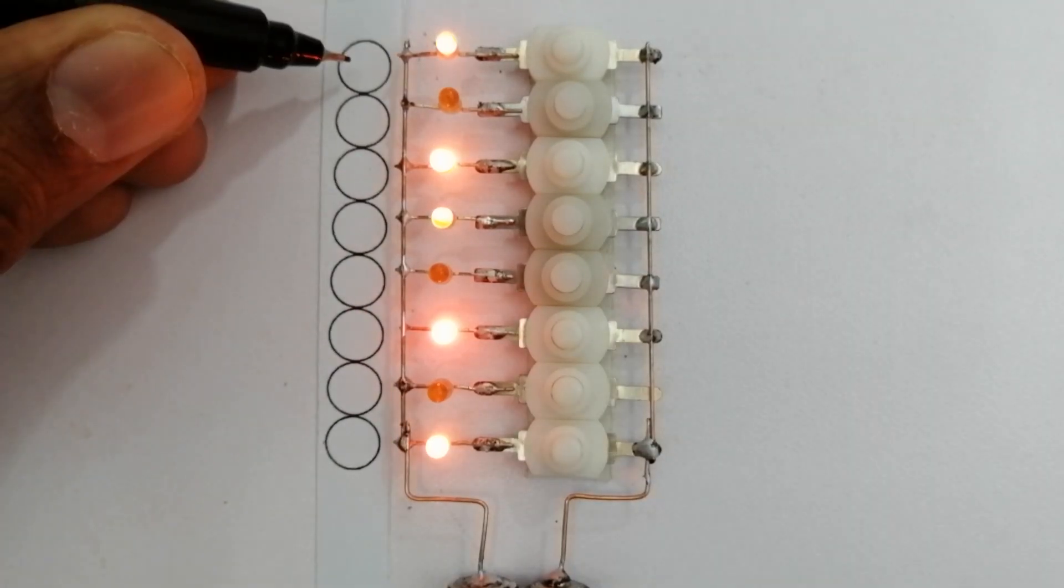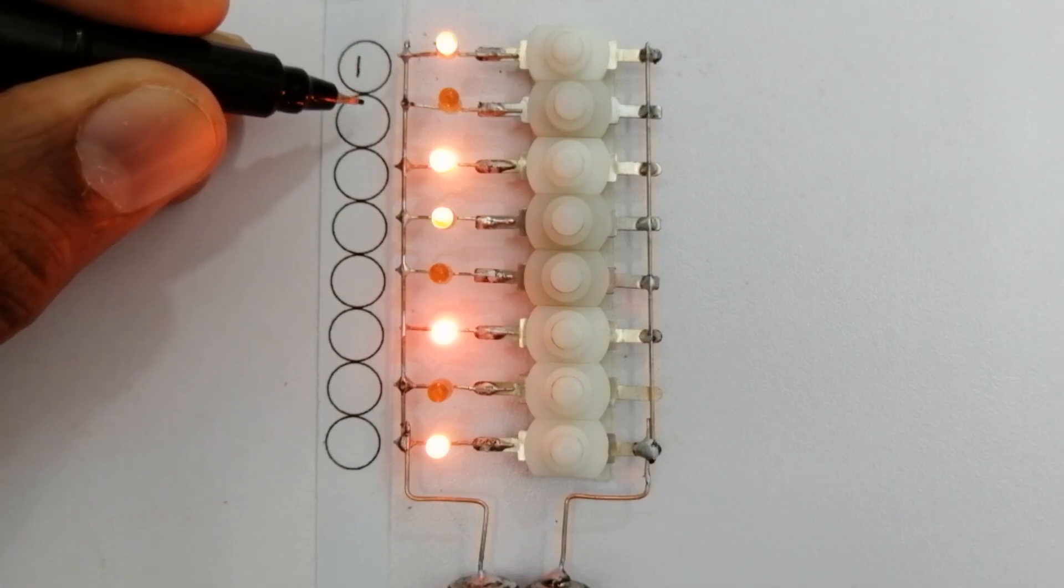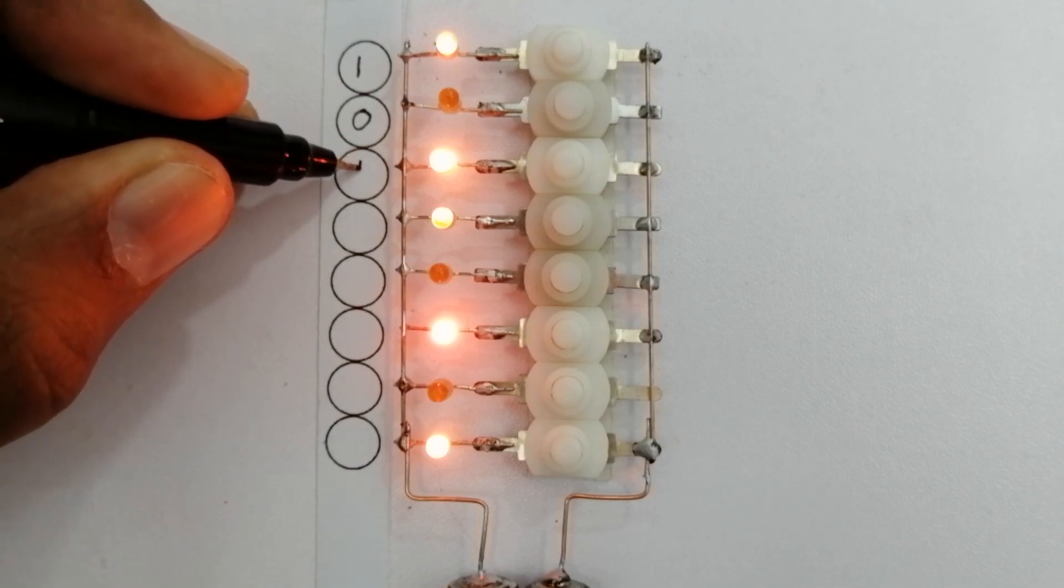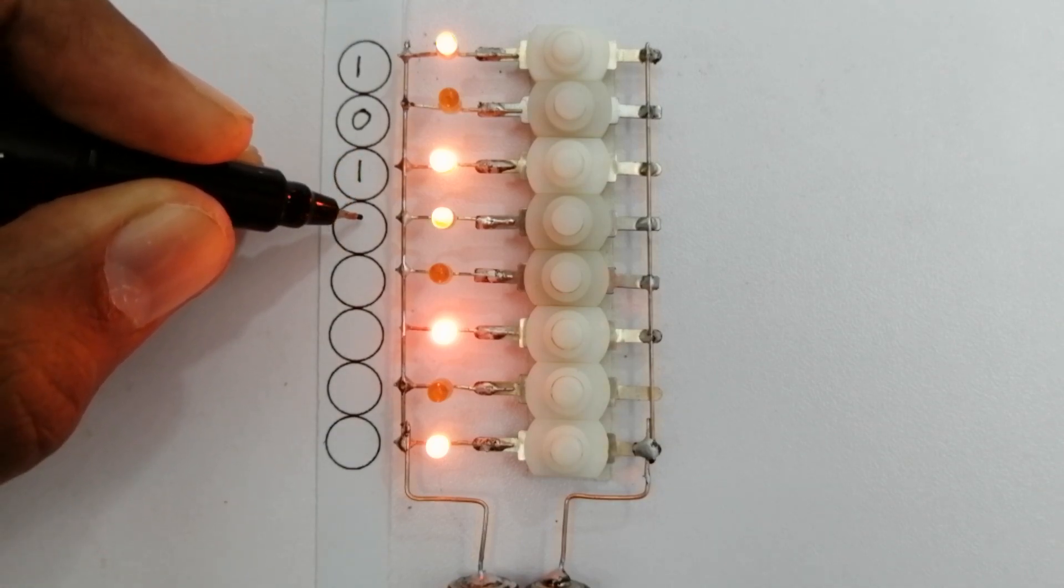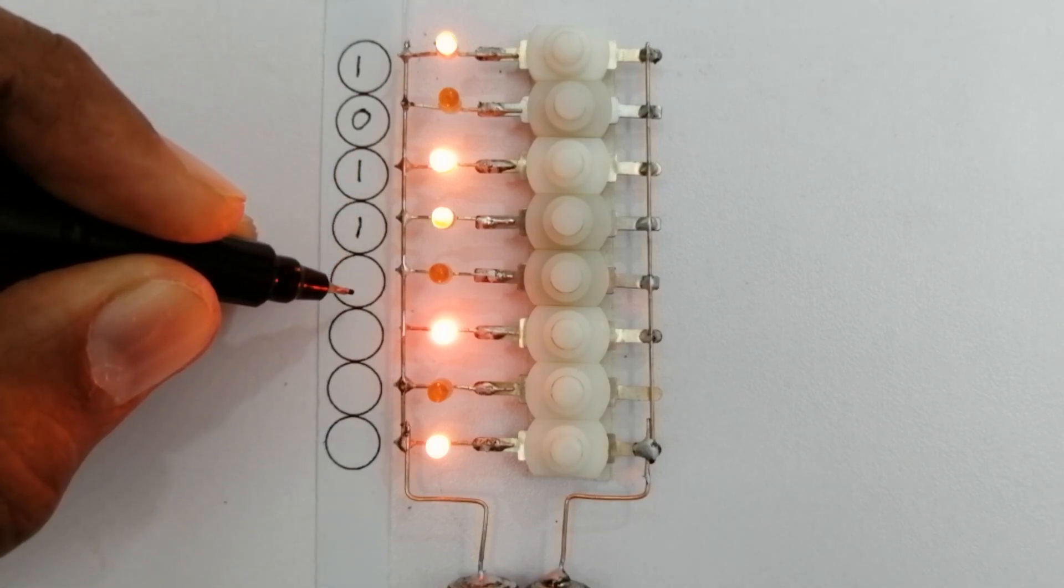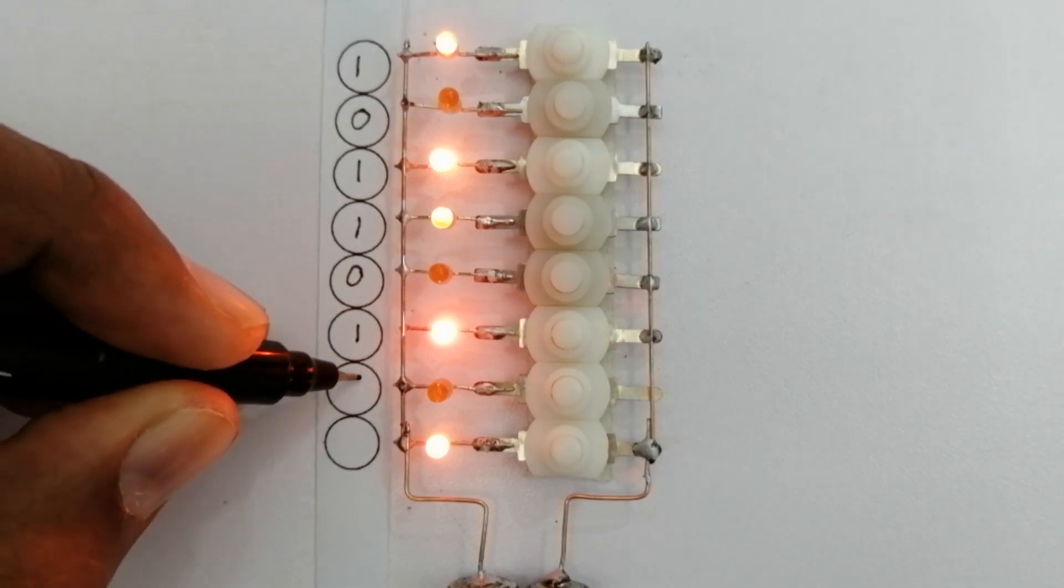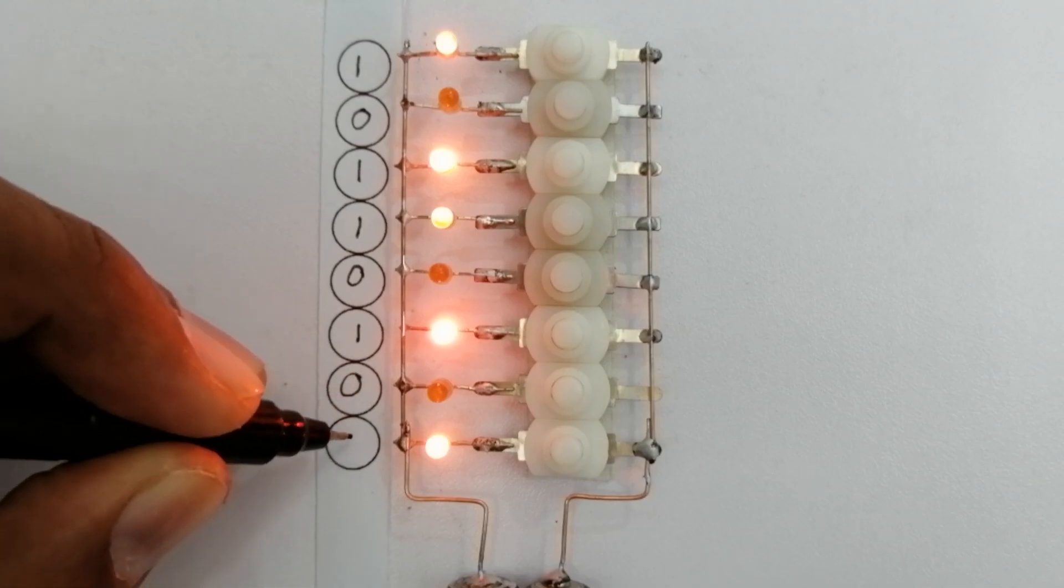When the first switch is on, it shows 1. Closed after this, it indicates 0. The next switch is on, it shows 1. The next switch is also on. The next one is off. The next switch is on. The next switch is also off. The next one is on.